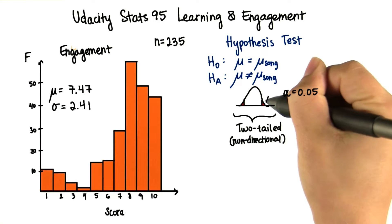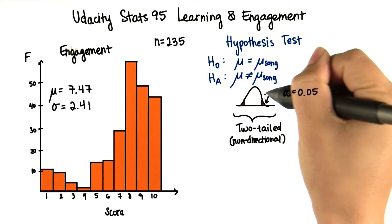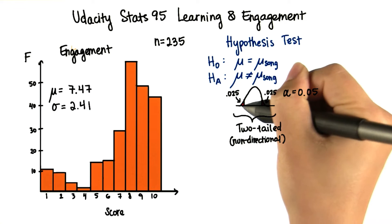Which means that for a two-tailed test, we have 2.5% here, or 0.025, and a proportion of 0.025 on the left tail.